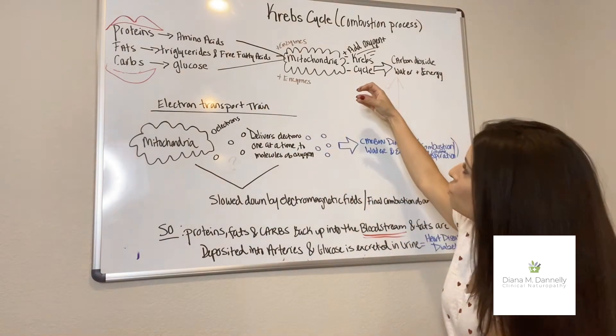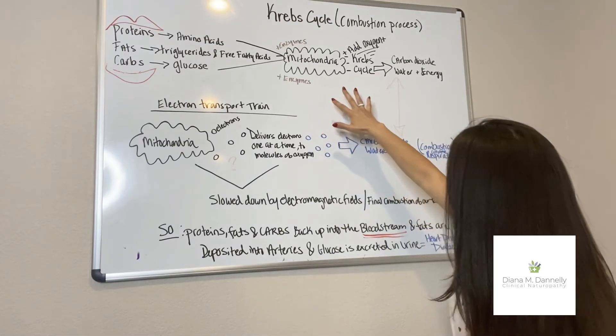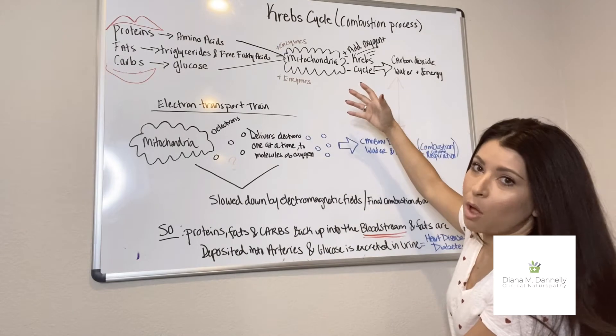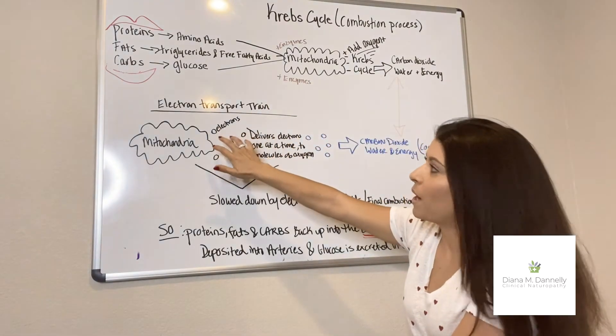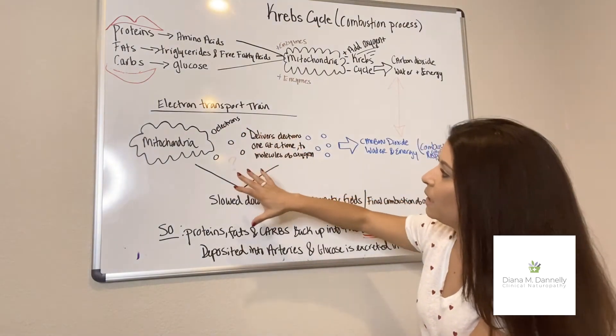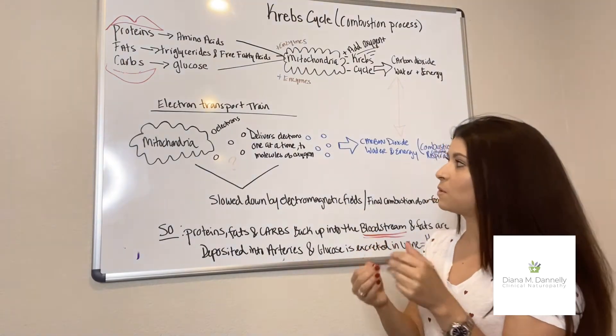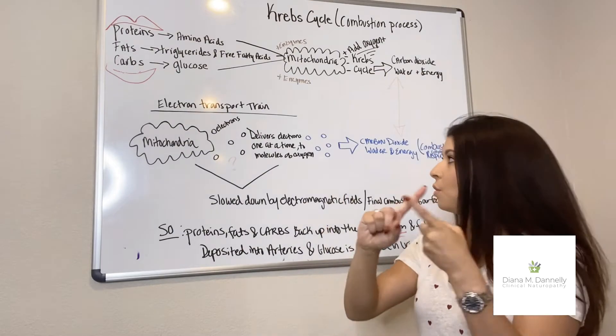So these all go into the mitochondria and they're broken down by enzymes, and they're further broken down so that they can have an oxygen molecule added to it. So when we get to the point where we're now adding oxygen, we call this the electron transport train. In the mitochondria, after the foods have been broken down further by enzymes, we're now gonna pair one electron with one oxygen molecule.